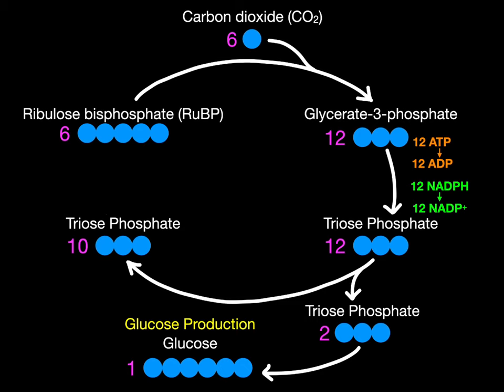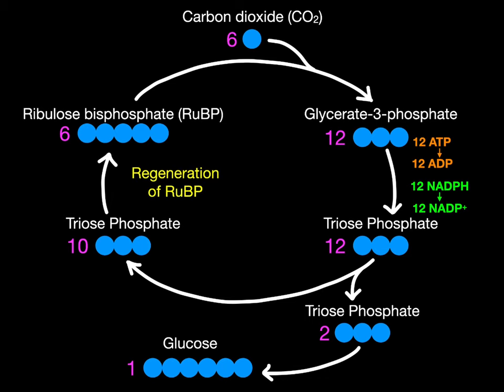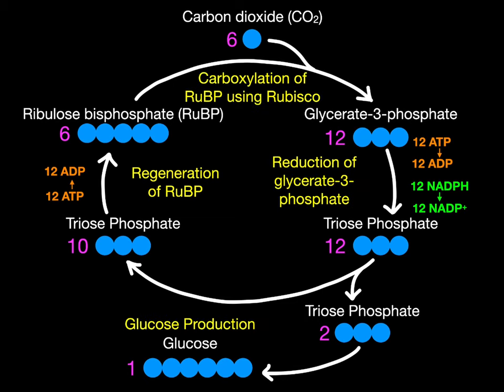The remaining 10 triose phosphates stay in the Calvin cycle and are used to regenerate RUBP. This again balances the carbons, because 10 triose phosphates which are three carbons each gives 30 carbons total, and six five-carbon RUBPs is also 30 carbons total. So with the coefficients we can see that at each stage of the Calvin cycle the number of carbons is balanced.